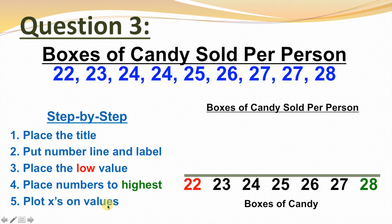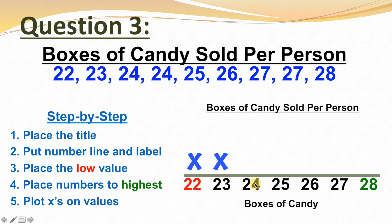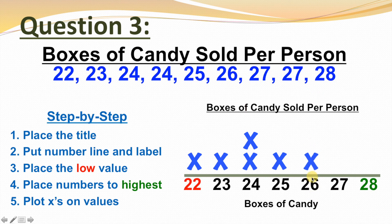Step 5, plot x's on values. One person sold 22 boxes, so 1x on 22. One person sold 23 boxes, so 1x on 23. Two people sold 24 boxes, so 2x's on 24. One person sold 25 boxes, so 1x on 25. One person sold 26 boxes, so 1x on 26. Two people sold 27 boxes, so 2x's on 27. And one person sold 28 boxes, so 1x on 28.